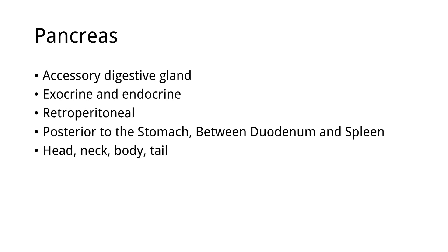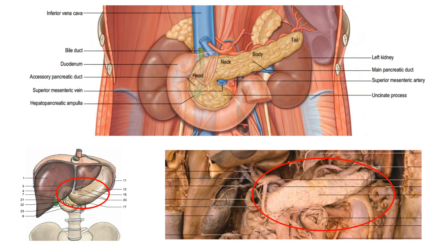The pancreas is a retroperitoneal organ, meaning it's not fully covered by peritoneum. It is located posteriorly to the stomach, between the duodenum and the spleen. It has four parts: the head, neck, body, and tail. Right here we can see the pancreas — this elongated organ — and in the cadaver it looks kind of like adipose tissue. It is located again behind the stomach, posteriorly to the stomach between the duodenum and the spleen.